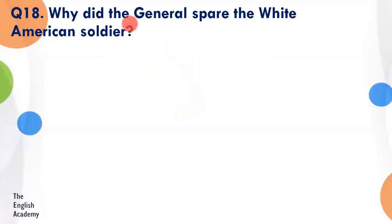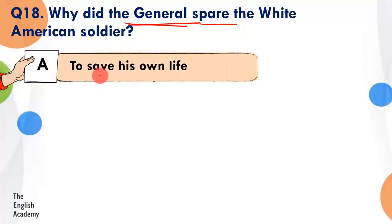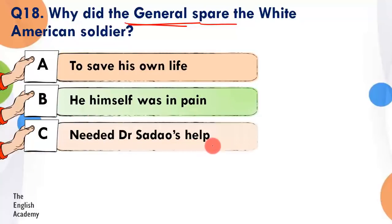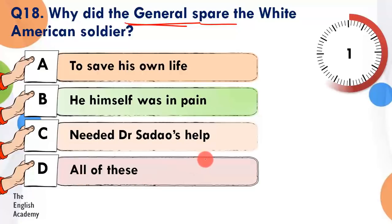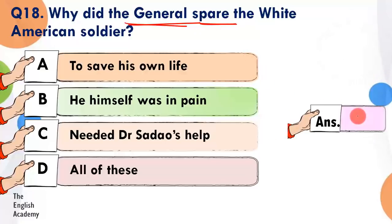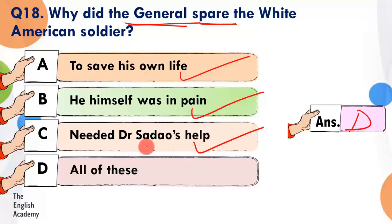Question 18: Why did the general spare the white American soldier? Option A: to save his own life. Option B: he himself was in pain. Option C: he needed Dr. Sadao's help. Option D: all of these. The answer is Option D — all of these. Woh apni jaan bachana chahta tha, woh khud taklif mein tha, aur use Dr. Sadao ki help bhi chahiye thi — Dr. Sadao ne uska operation karna tha, isliye usne koi action nahi liya.